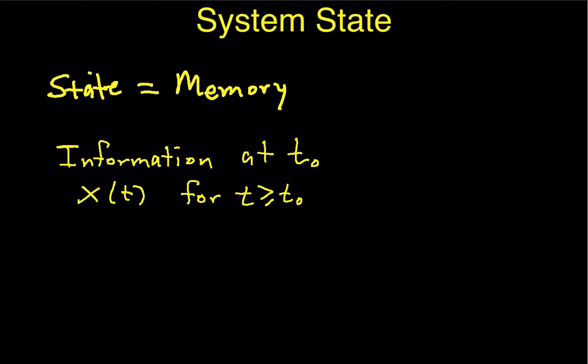So basically you know the state at time t 0, and you know the input for the system at times larger than t 0, then you can compute the state for values of t greater than t 0, and you can compute the output.